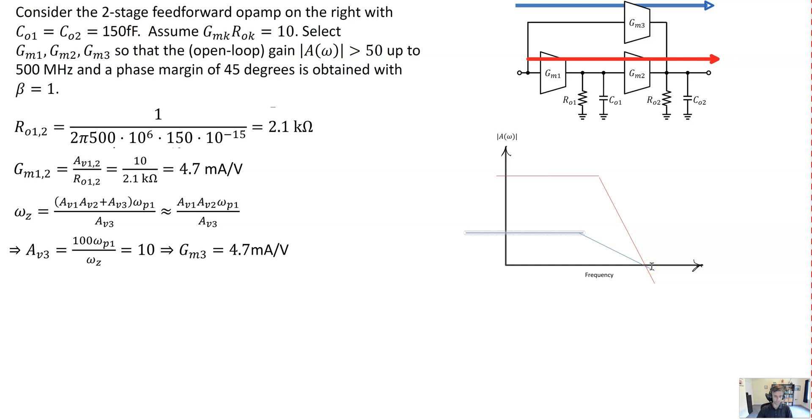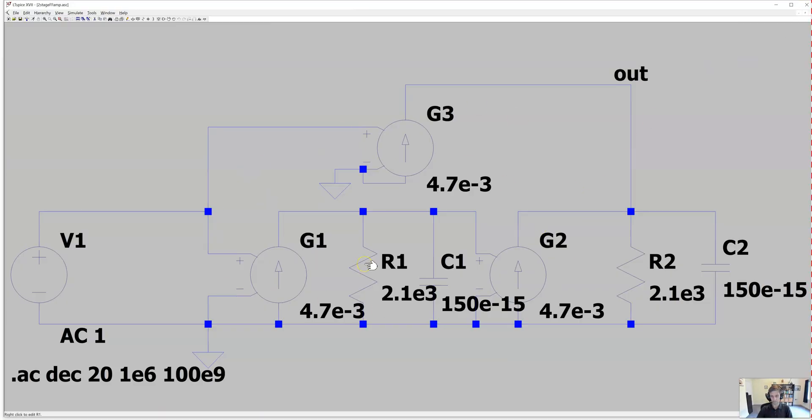So that's all good for the hand calculations. Let's see how it works out in simulations. We've got that entered here to our simulator. You can see the transconductances are all 4.7 milliamps per volt for GM1, GM2, and GM3. The capacitance is 150 femtofarads at each node, and the output resistance is 2.1k as we calculated. We're just going to run an AC simulation here to see what kind of phase margin we get.